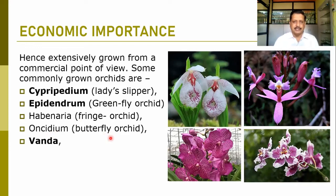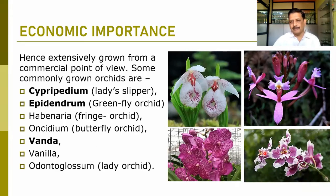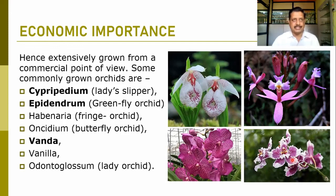Then there is Oncidium — the butterfly orchid — where the shape of the petals and sepals is just like a butterfly. Vanda roxburghii has beautiful spotted flowers and is a common species to plant. Then Vanilla has greenish-type sepals and petals, and Odontoglossum is also known as the lady orchid with beautiful flowers.